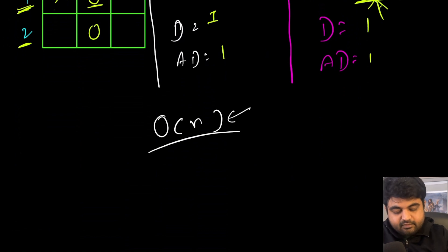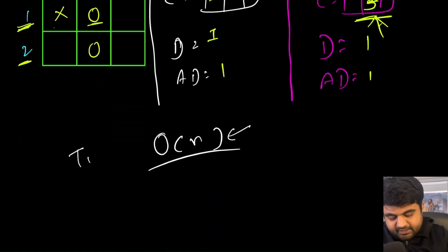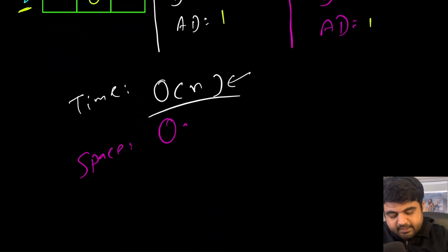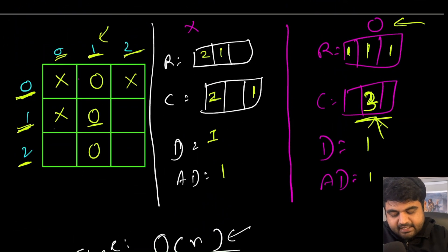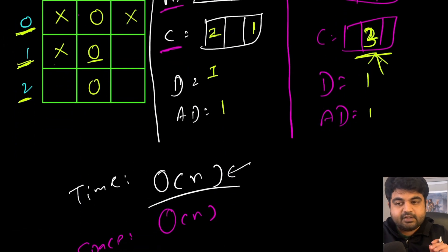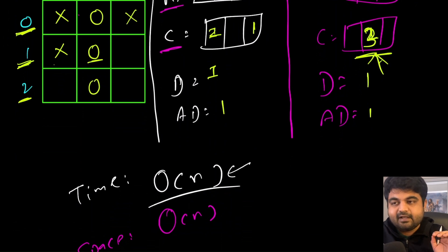This entire solution runs in O(n) time only — much better than the brute force O(n²) approach. Space complexity is also O(n) because the rows and columns arrays are directly dependent on n.